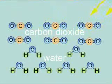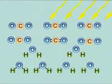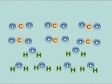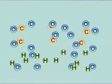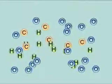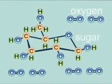Plants use the energy in sunlight to split molecules of carbon dioxide and water apart. The atoms of carbon, oxygen and hydrogen can then be recombined to form sugar and oxygen molecules.